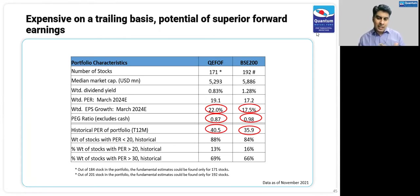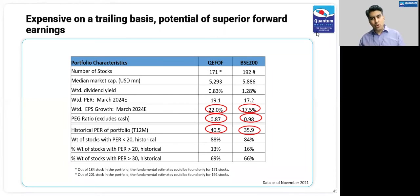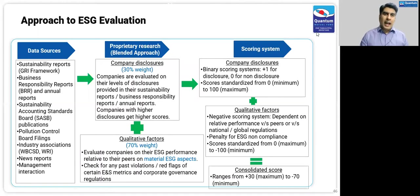On a trailing basis, this portfolio does have a higher trailing PE at 40 times, whereas BSE 200 is about 36 times. But the earnings growth projections for the companies it owns are 22% CAGR over the next two years, versus 17.5% for BSE 200. If you look at forward PE adjusted for growth — the PEG ratio — this portfolio is at 0.87 versus the BSE 200 at 0.98. So in an upcycle, the earnings growth will take care of the higher valuation prevailing today.